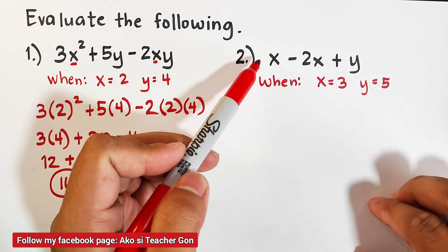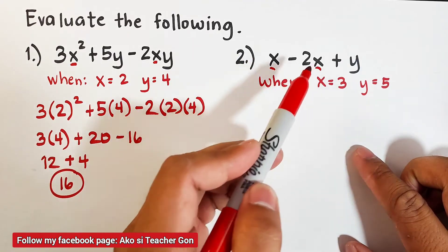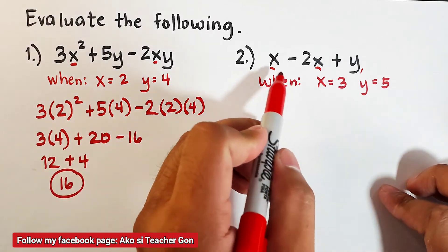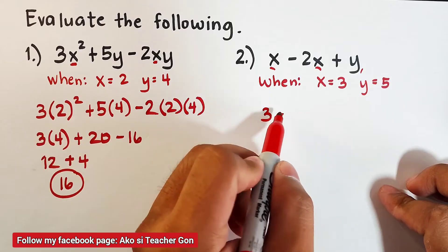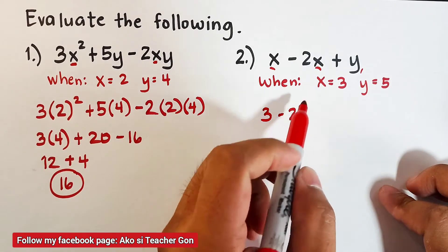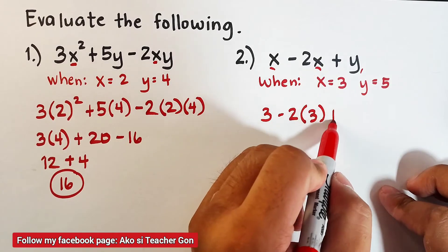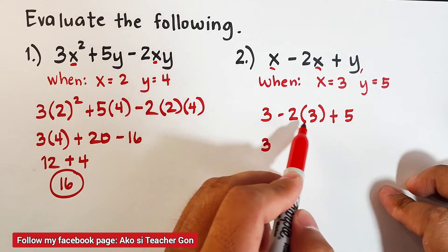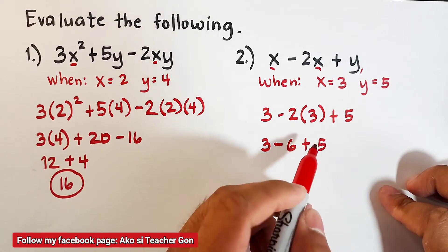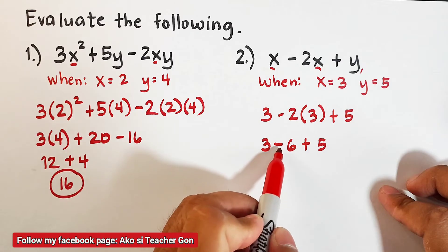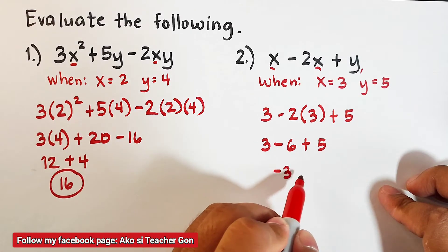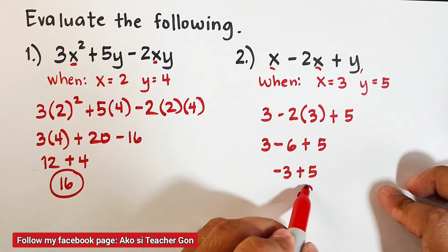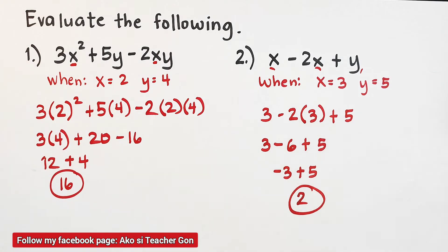In number two, we have 3 minus 2x plus y, where x is equal to 3 and y is equal to 5. So we replace x with 3 and y with 5: we get 3 minus 2 times 3 plus 5. Negative 2 times 3 is negative 6, then plus 5. Simplifying: 3 minus 6 is negative 3, plus 5 equals 2. This is the evaluated form of item number 2.